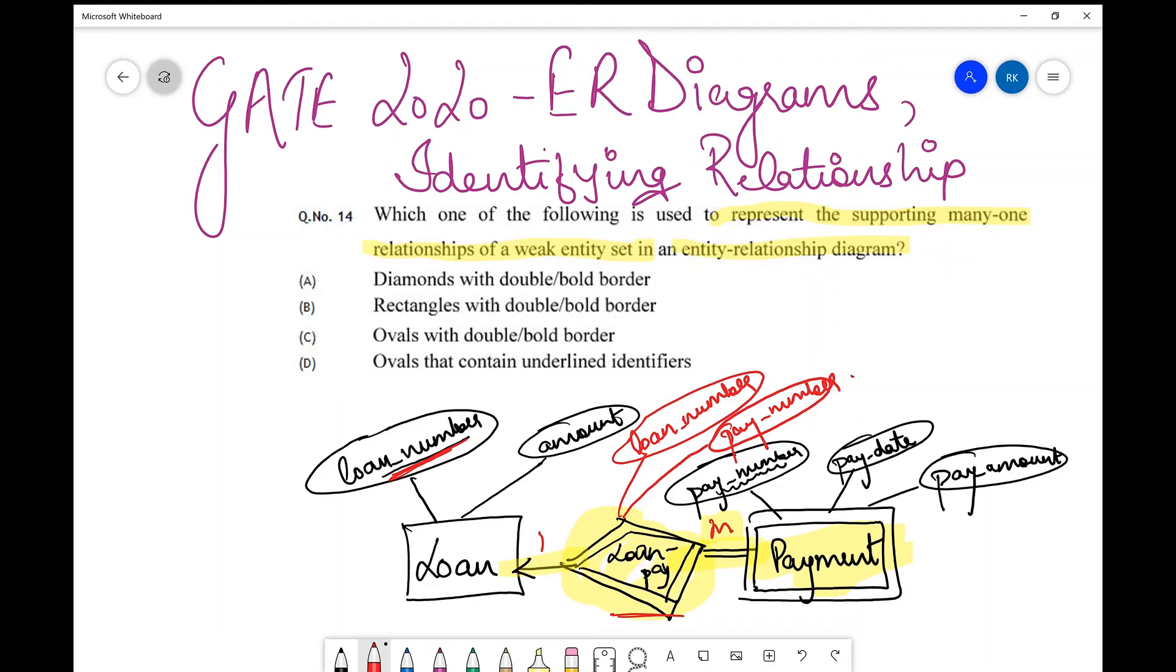Now, what is the notation for this? The notation is this diamond with a double or bold border, so the answer over here is part A. That's all for this particular video. As you can see, many times you just get direct questions in GATE which test your concepts and understanding.